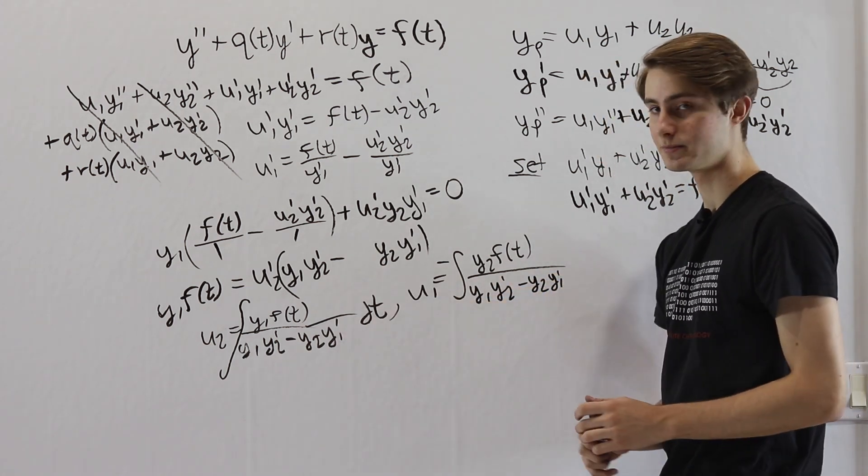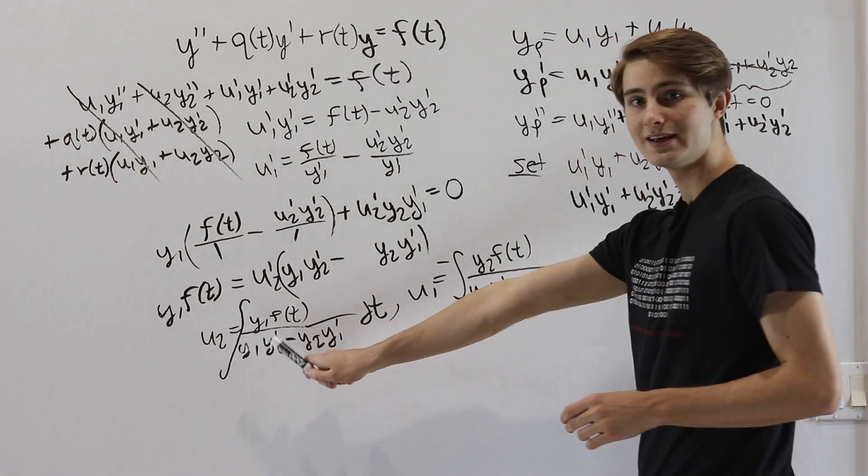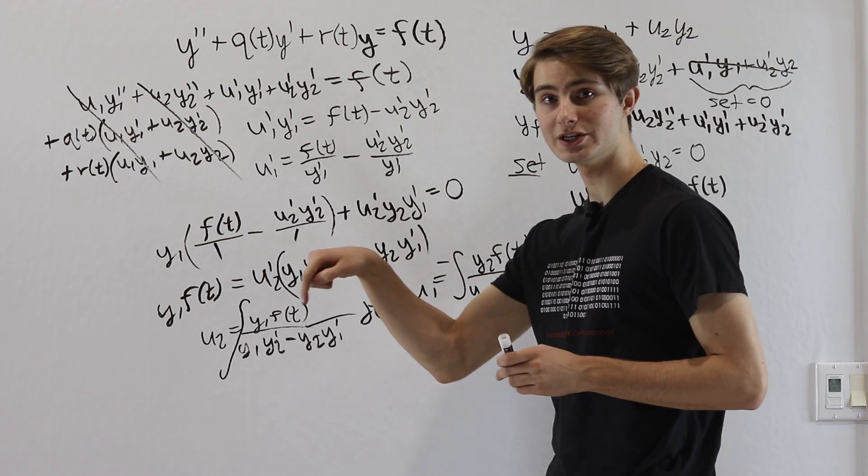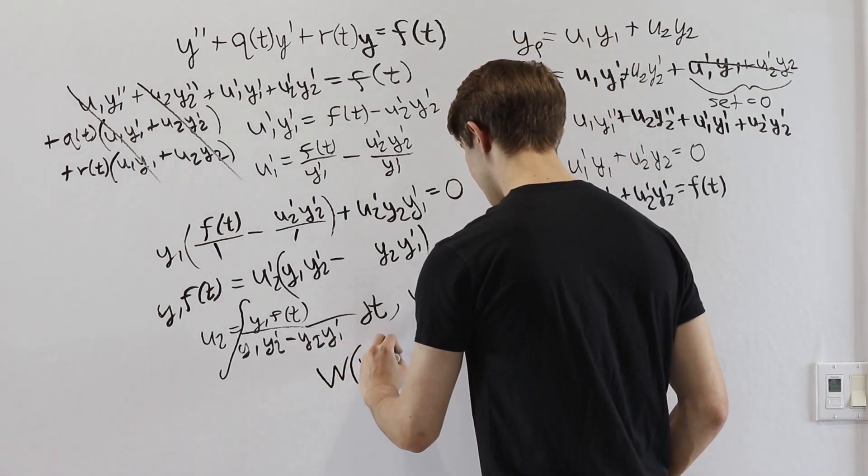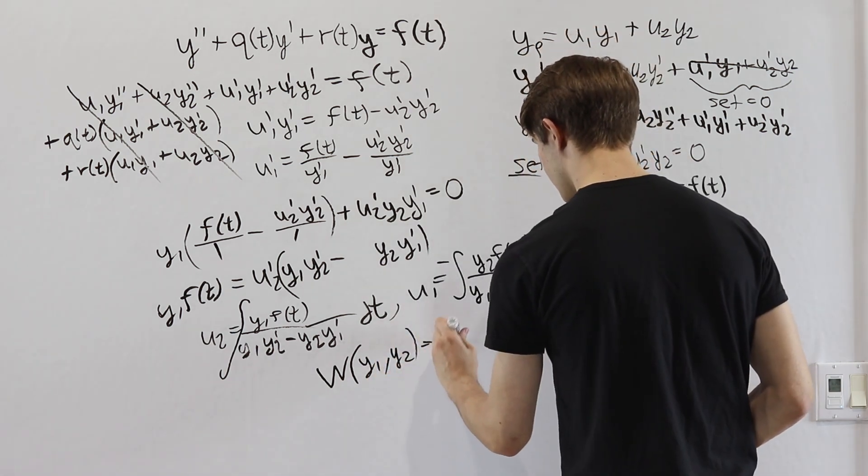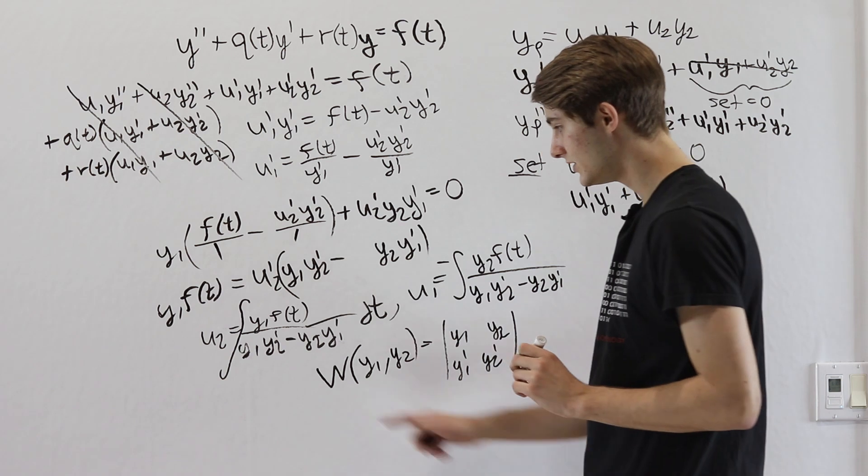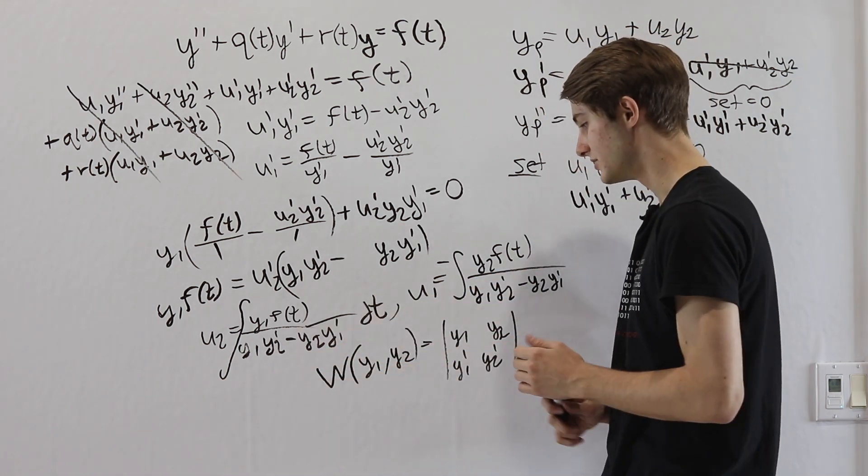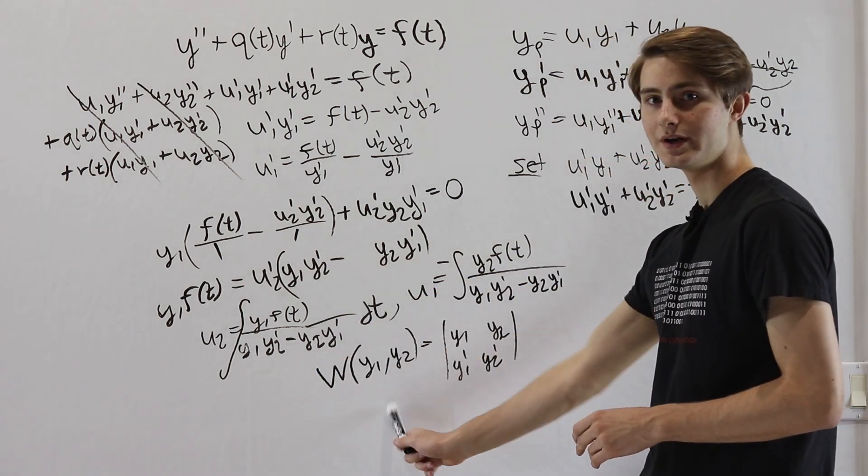That is just negative of what we have on the denominator here. So for u1 I am going to put a negative on the outside of the integral and then put the same denominator. So y1y2 prime minus y2y1 prime. And the reason for that is that notice on the bottom here y1y2 prime minus y2y1 prime. If you know your linear algebra well you might recognize this as a type of determinant. It is one specific type of determinant that we have actually talked about before. That is called the Wronskian determinant of y1 and y2.